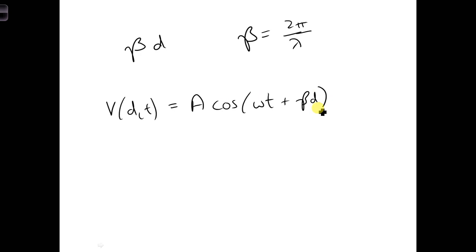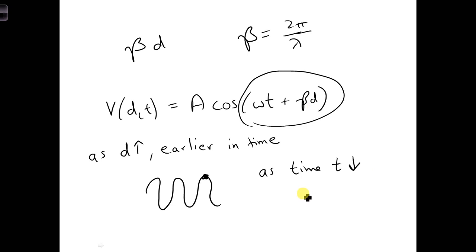Let's take a step back and see if this equation makes sense. We know the wave will occur earlier in time as we travel from D equals 0 towards the generator. So as D goes up, we should get a wave that is earlier in time. How does D change to get a constant argument? Like say we want to track a peak of this cosine waveform. How does D need to change in order to get a constant argument? So as time t decreases, as time goes down, as we go earlier in time, how does D change to get a constant argument? Well, if we look at this argument, as t goes down, there's a plus sign, so D would have to increase. Which makes sense, because as we increase D, we go towards the generator, which is earlier in time.